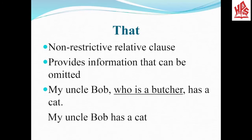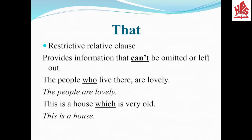That has two relative clause types: non-restrictive and restrictive. In the non-restrictive relative clause, we get information that can be omitted. For example: My uncle Bob, who is a butcher, has a cat — the underlined part shows additional information about uncle Bob, so we can write it as: My uncle Bob has a cat. In the restrictive relative clause, we get information that cannot be omitted or left out. For example: The people who live there are lovely — if you write only the people are lovely, you lose the information about which people.